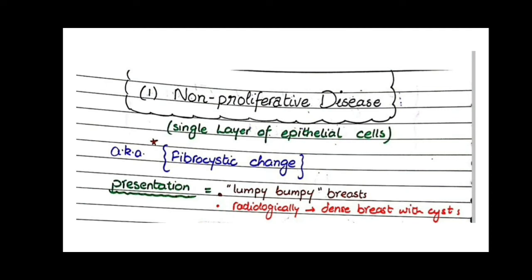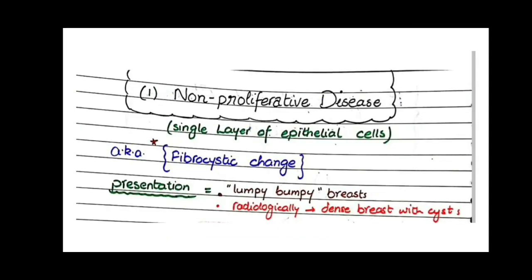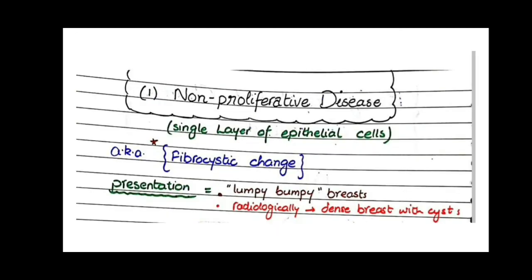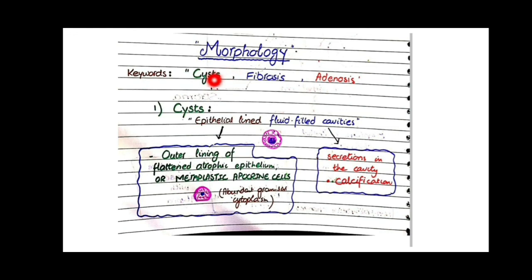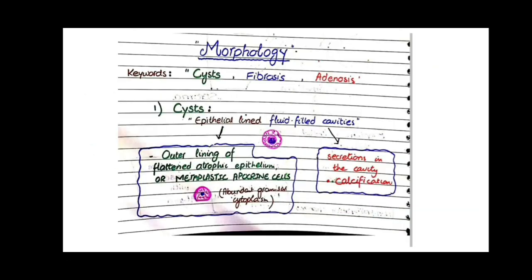Regarding the clinical presentation: non-proliferative disease presents as lumpy bumpy breast because the cysts in fibrosed breast tissue form lumps. Radiologically you see a dense breast with cysts — dense because of fibrosis, and cysts because of the morphological changes. Together, cysts and fibrosis constitute the fibrocystic change of the breast, a term for this non-proliferative disease characterized by fibrosis and cysts.